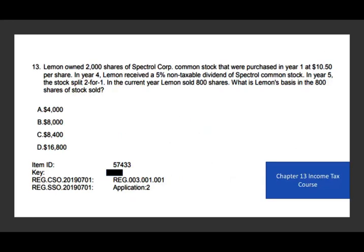Let's take a look at the next exercise. Lemon owned 2,000 shares of Spectral Corporation common stock purchased in year one at $10.50 per share. In year four, Lemon received a 5% non-taxable stock dividend. In year five, the stock split two-for-one. In the current year, Lemon sold 800 shares. What is the basis of the 800 shares? The original investment was 2,000 × $10.50 = $21,000.